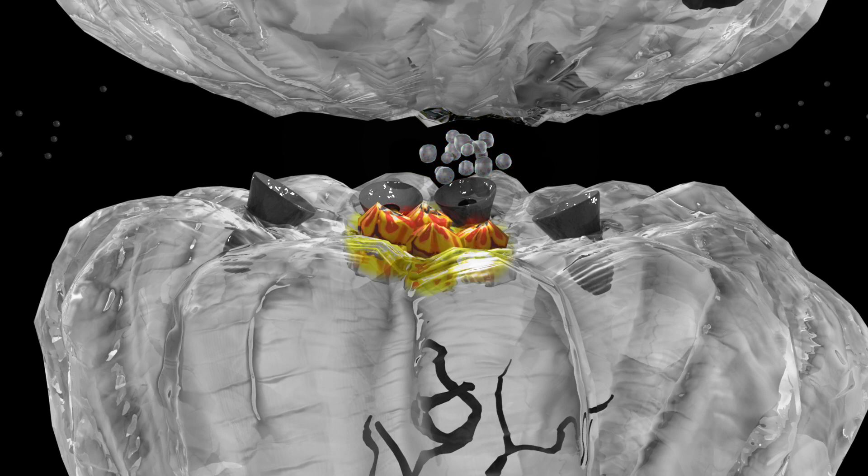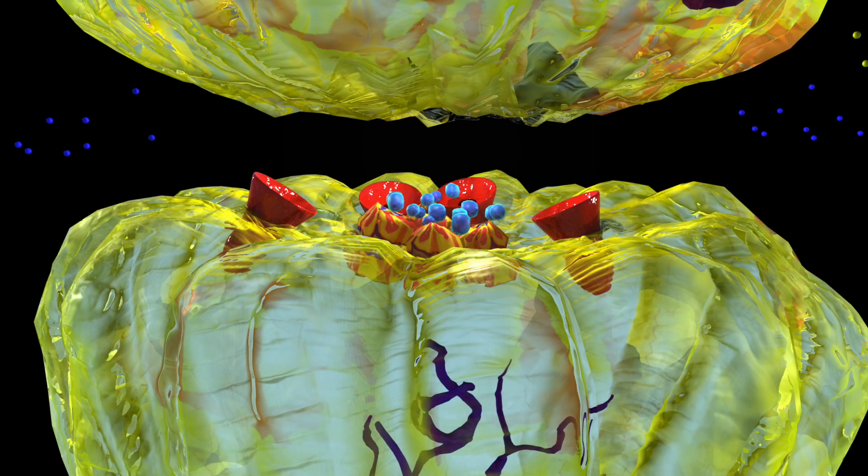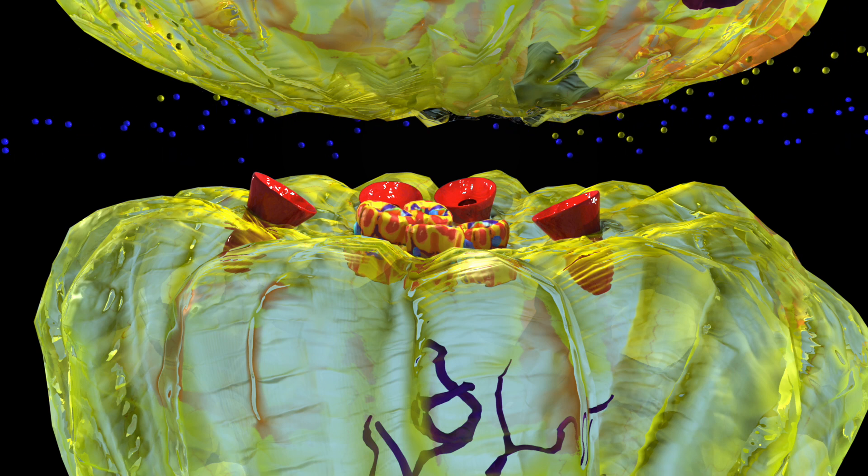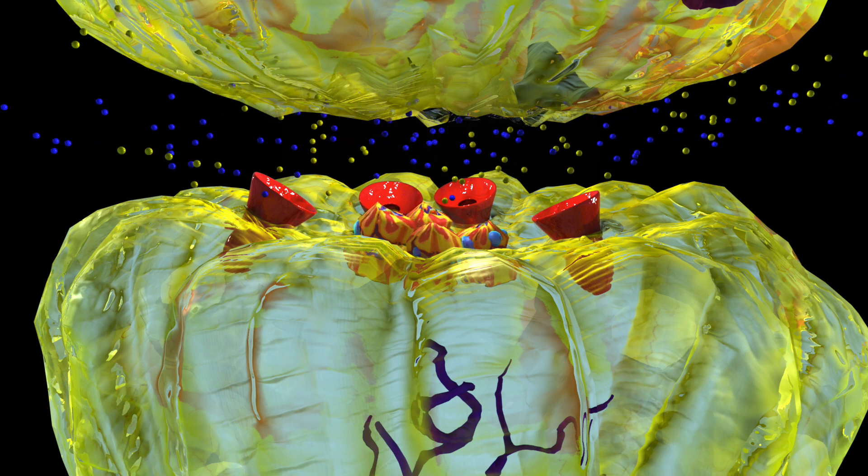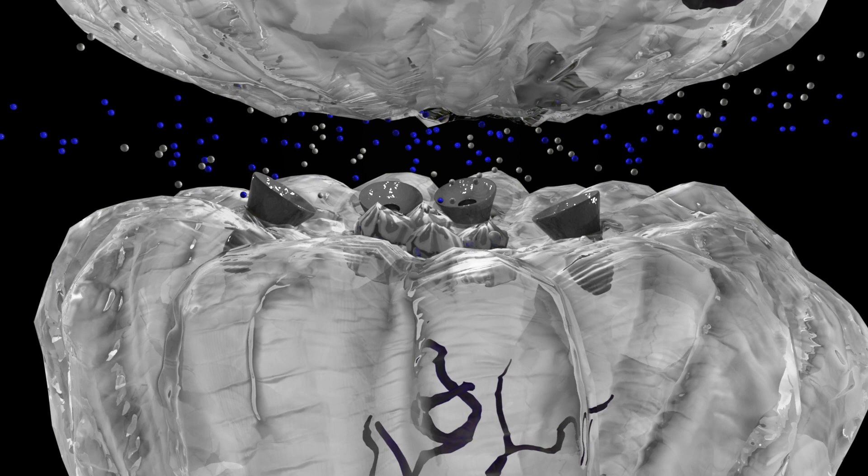This is the GABA receptor. When GABA binds, it opens up the receptor and allows chloride to enter. This is chloride. This negative ion stops the electrical signal.